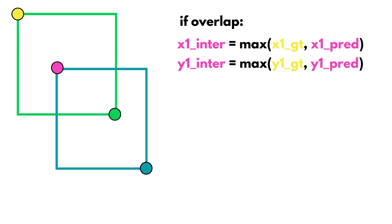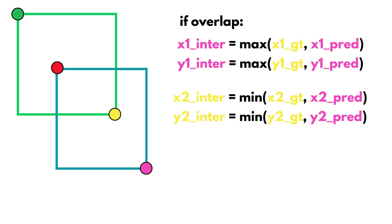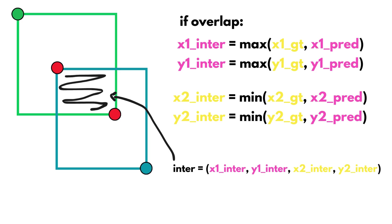In this example, it's again the y from the prediction that is the largest. The intersection top left is x1 prediction and y1 prediction. For the bottom right point, it's the inverse — it's the minimum of the bottom right coordinates of the bounding boxes. In this example, it's the coordinate set of the ground truth that is the smallest. Therefore, the four coordinates for the current example are: x1 pred, y1 pred, x2 ground truth, y2 ground truth.